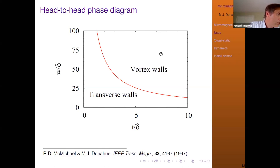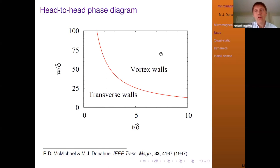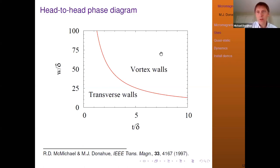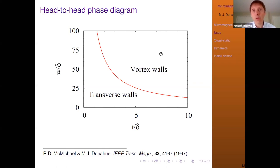A question about boundary conditions: typically in micromagnetics we work with free boundary conditions. Because of the exchange term, the free boundary condition means the derivative of the magnetization with respect to the surface normal — dM/dn — is equal to zero at the boundary. You can also add surface anisotropies. We currently support 1D periodic boundaries and there's an extension that does 2D periodic boundaries; I'm hoping to have native 2D periodic boundary support by the end of the summer.